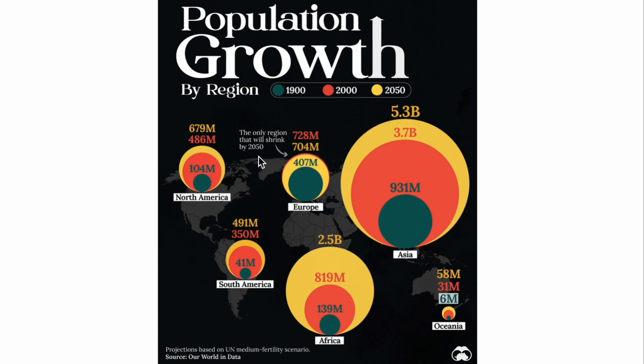Moving on to Asia: in 1900 it was 931 million people, in 2000 they had 3.7 billion, and the projected growth by 2050 is 5.3 billion people. Though I have seen some projections suggesting that even with higher growth, parts of Asia won't keep up with what they need.